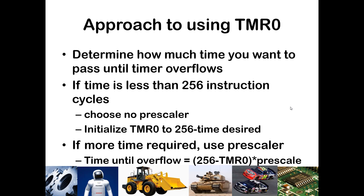When choosing a prescaler, select one where the prescaler multiplied by the time per instruction cycle is an even divisor as close as possible to your total desired time. For example, if you want up to 512 cycles choose 2-to-1; up to 1024 cycles choose 4-to-1. The total time is 256 minus TMR0, multiplied by the prescaler, so you set TMR0 accordingly so the timer overflows at the right time.